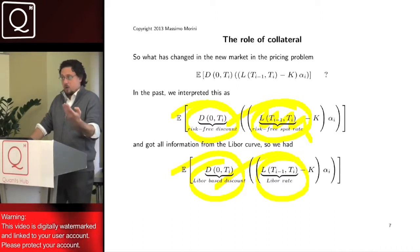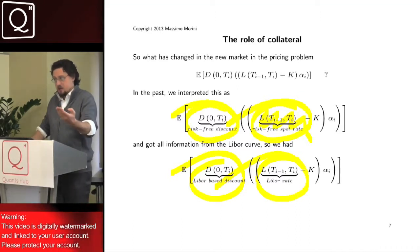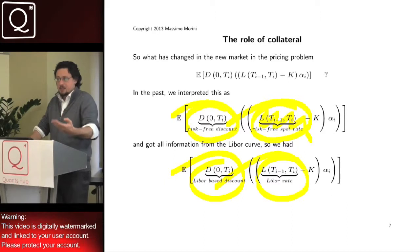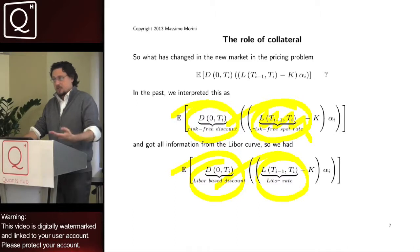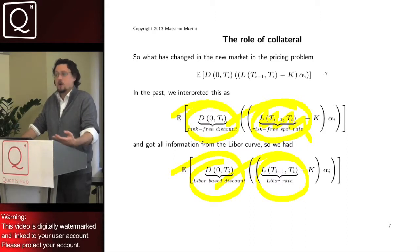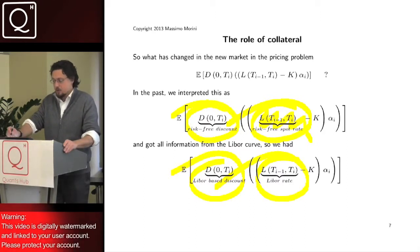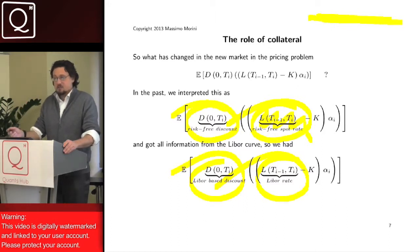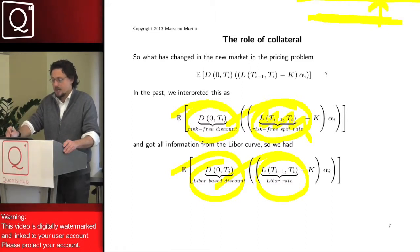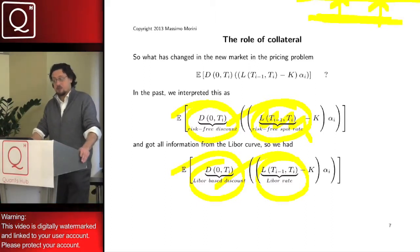Just the curve where you used to read the discounting is no more risk-free. You have to change the curve to go on getting a risk-free discount. Notice that you could have bootstrapped the right discount from OIS even before the crisis. You were using LIBOR just because OIS and LIBOR coincided, if you remember. And now, the problem is that OIS has remained at least an approximation of risk-free, while LIBOR went up and cannot be used anymore as a risk-free discount.